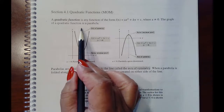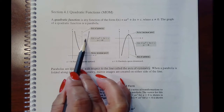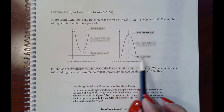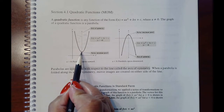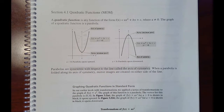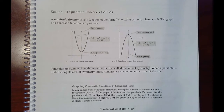Parabolas are symmetric with respect to a line called the axis of symmetry, which comes right through the vertex and creates equal halves on either side. The vertex is the point the axis of symmetry passes through, whether the parabola opens up or down. We will look at how to graph quadratic functions given in different forms — sometimes with a single parenthesis, sometimes two, and sometimes no parentheses at all.